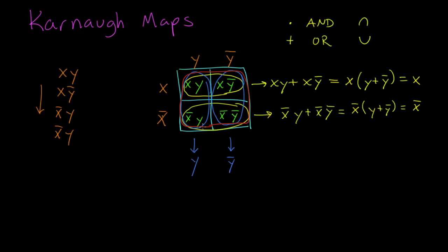Finally, the entire grid is the union of all four cells. This simplifies to just one.